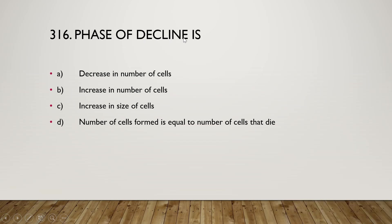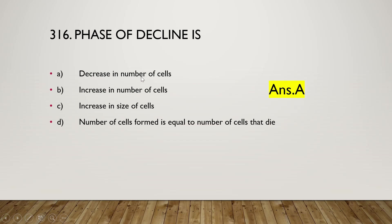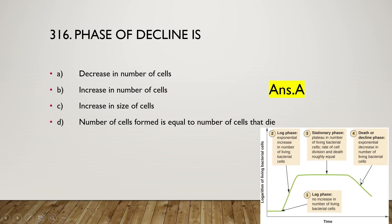The decline phase is characterized by decrease in number of cells, increase in number of cells, increase in size of cell, or number of cells formed equals number of cells that die. The right answer is option A — decrease in live number of cells. In the decline phase, there is an exponential decrease in the number of living bacterial cells.